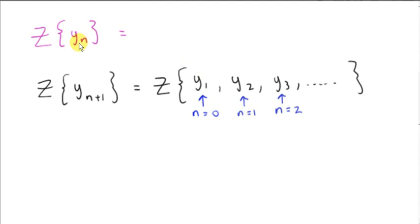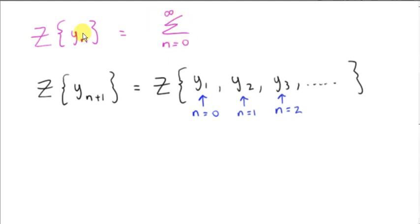We will need the z transform of y sub n. We've seen this many times before: we're summing from n equals 0 to infinity of our sequence y sub n, multiplied by z to the power of minus n.